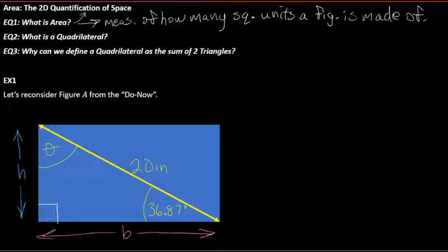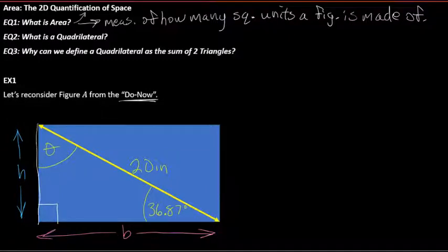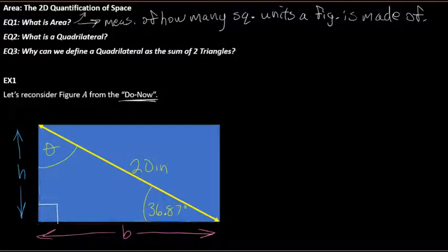Let's reconsider what we did in the do-now. You probably figured out pretty quickly that this is a 3-4-5 right triangle — it's just been scaled up by a factor of four. So our height is 12, our base is 16, and our hypotenuse is 20. But that's not what's important here.